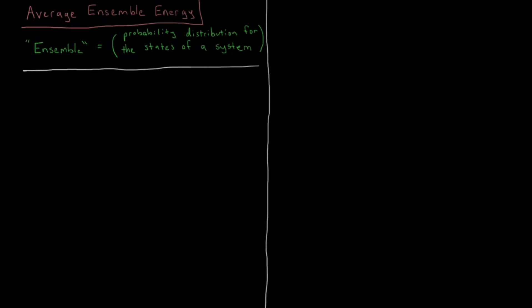Continuing on from our discussion of the Boltzmann factor and probabilities for different states for a system, let's now try to calculate the average energy of a system if we know its partition function.